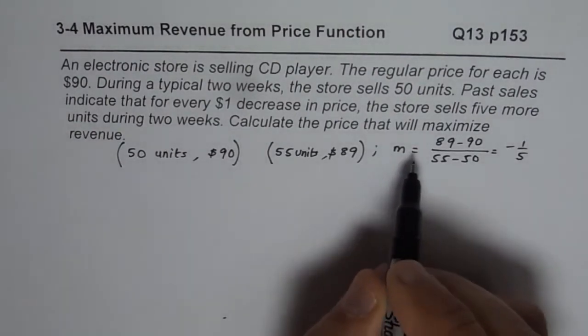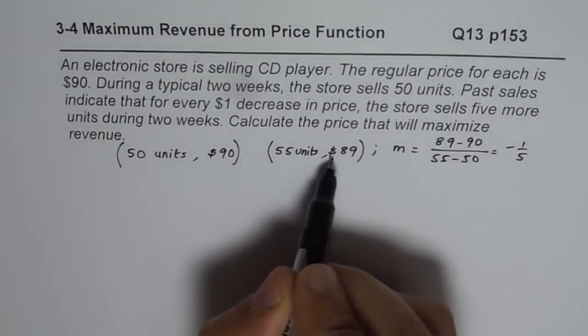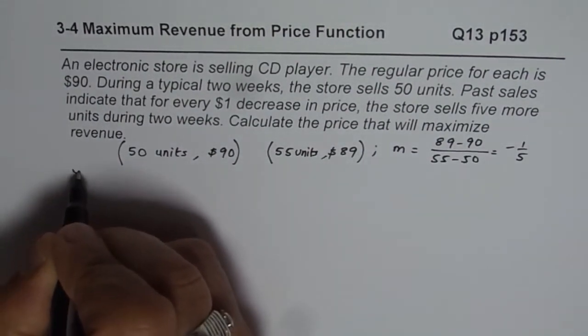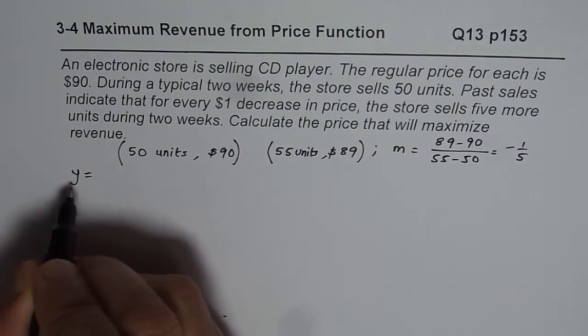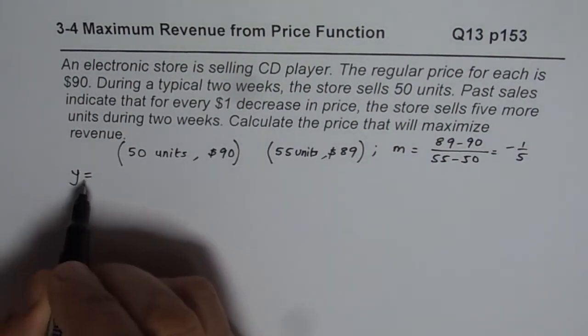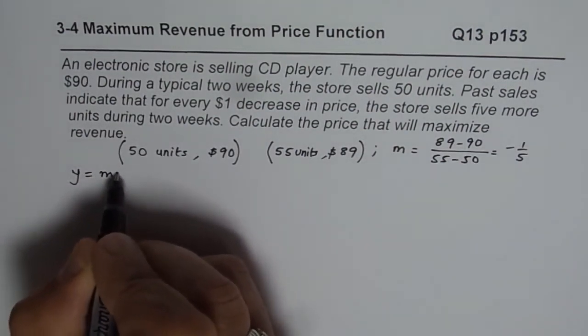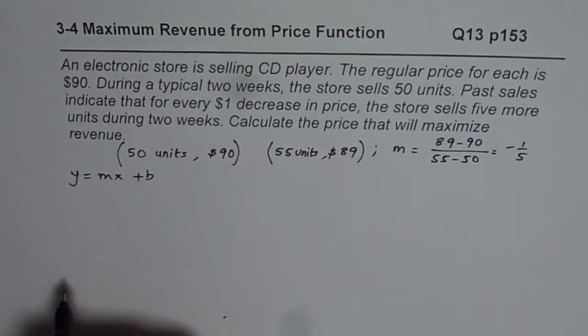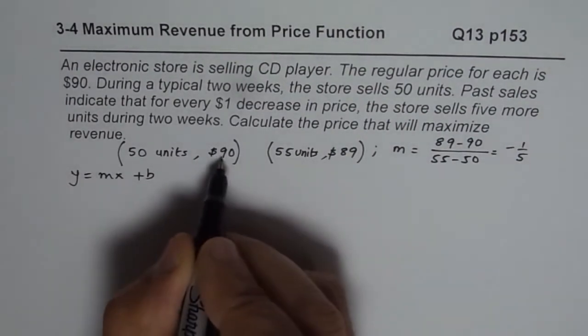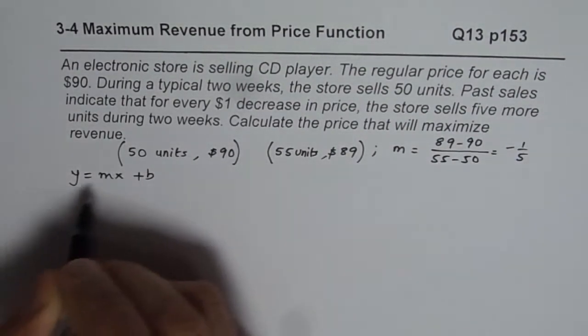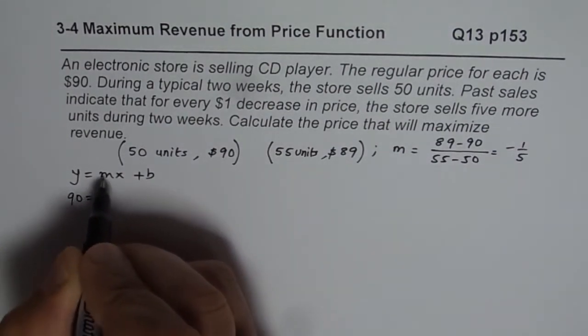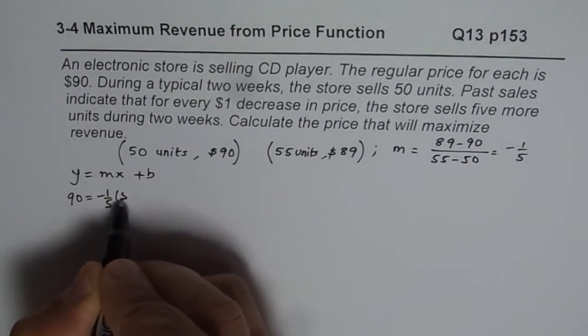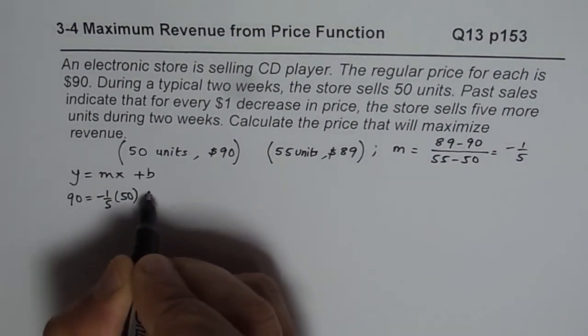Now we can find the equation for the price function. This price, the dependent variable, we'll call it P of x. We can write y for the time being, and then we'll replace it with price function. And we'll use y equals mx plus b, the linear equation, to form the price function. So let's take this point, 90 is y value, 50 is x value, we'll write 90 here, slope is minus 1 over 5, x is 50, and let's find the y-intercept b.